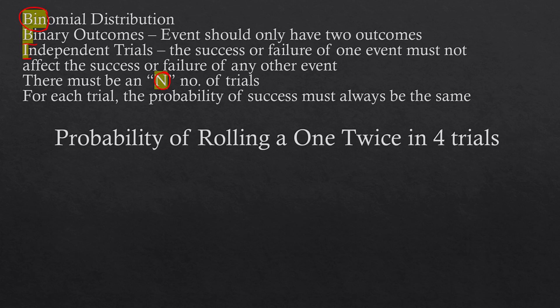We also have independent trials, as the events are not affected by the occurrence of any other events. For example, if you roll a die twice, the outcome of the first roll and the second roll have no effect on each other — they are independent. We also have a defined number of trials, which in this context is 4 trials.